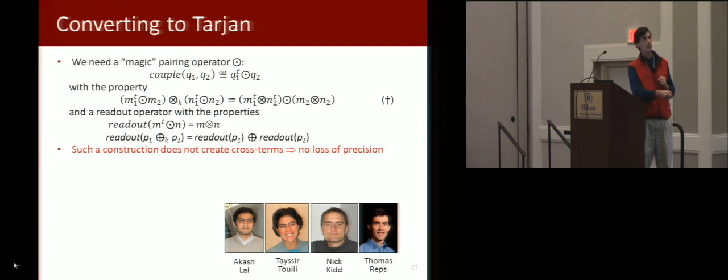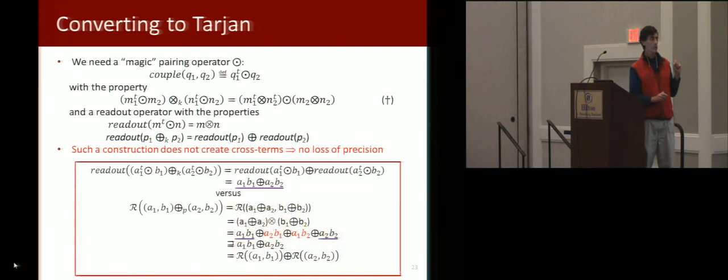And then the other property that we need is that our readout operation has to distribute over the sum of these couples. Such a construction does not create cross terms because of this distributivity property.